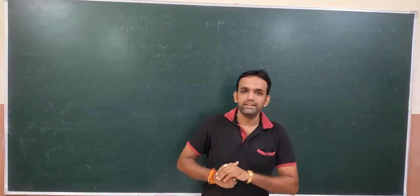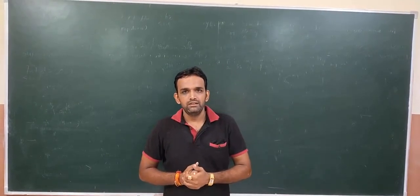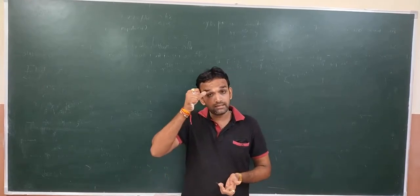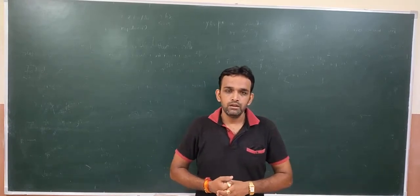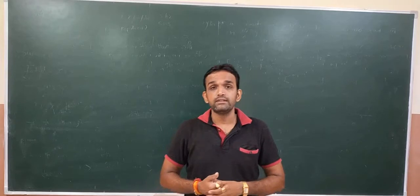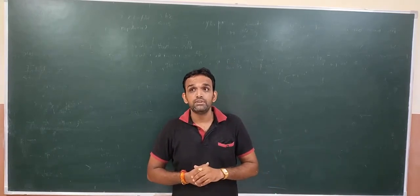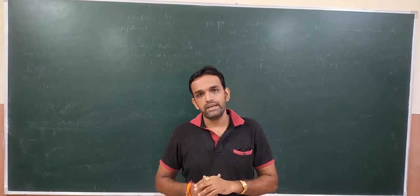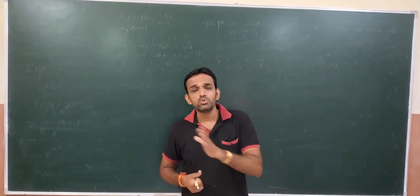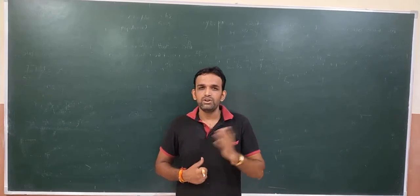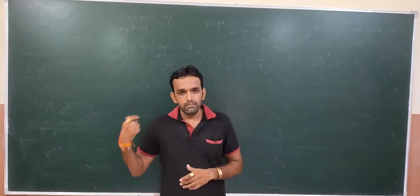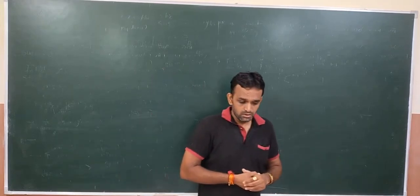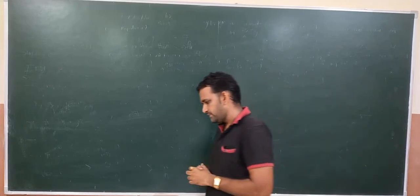Welcome back to all my dear students. Today in this video we are going to discuss the VSEPR principle. Before starting, let us revise the topic from the last video. We discussed the geometrical shapes of molecules where the central atom has non-bonding electron pairs, covering shapes like AB2E, then bent shape, T-shape, and see-saw shape.